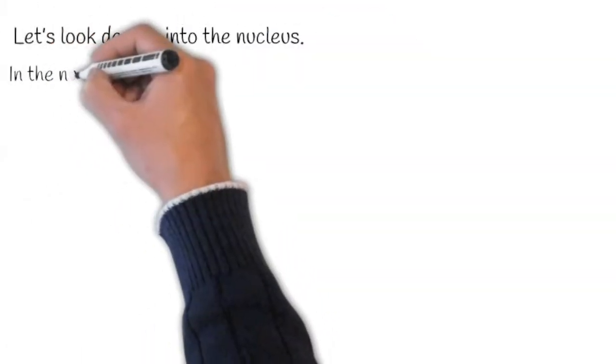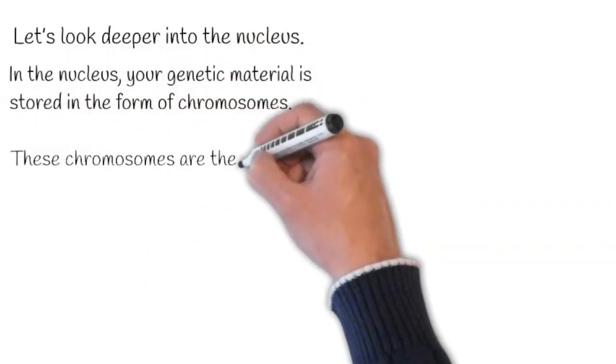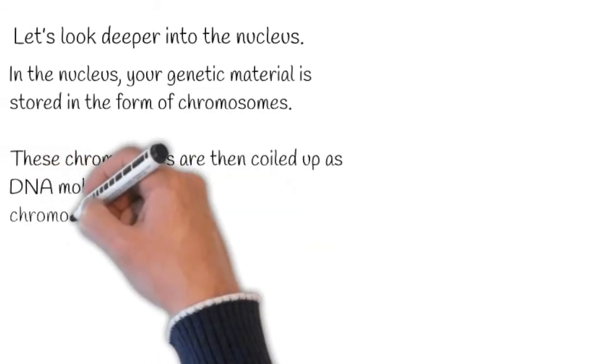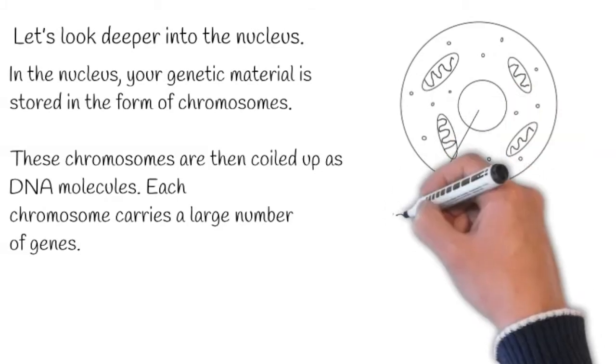Let's look deeper into the nucleus. In the nucleus, your genetic material is stored in the form of chromosomes. These chromosomes are then coiled up as DNA molecules. Each chromosome carries a large number of genes.